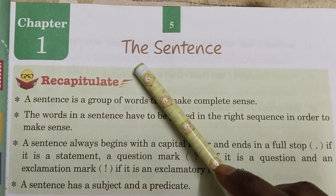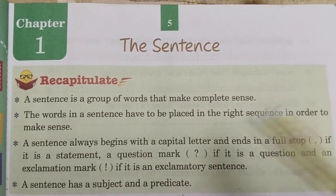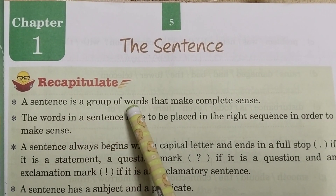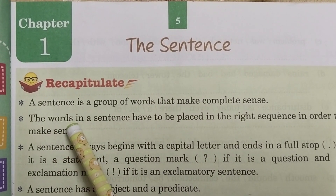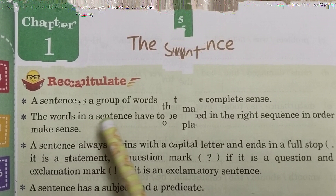A sentence is a group of words that make complete sense. The words in a sentence have to be placed in the right sequence in order to make sense. A sentence always begins with a capital letter and ends in a full stop if it is a statement, a question mark if it is a question, and an exclamation mark if it is an exclamatory sentence. A sentence has a subject and a predicate.